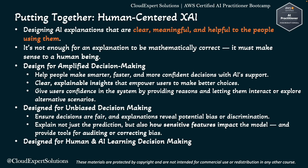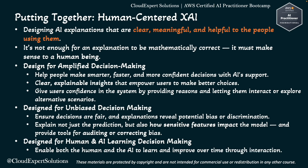The last principle is Design for Human and AI Learning Decision Making, which enables both the human and the AI to learn and improve over time through interactions. Human-Centered Explainable AI isn't just one-way — from AI to human. It's a collaboration loop where humans learn from the model and the AI adapts to human feedback or changing needs.